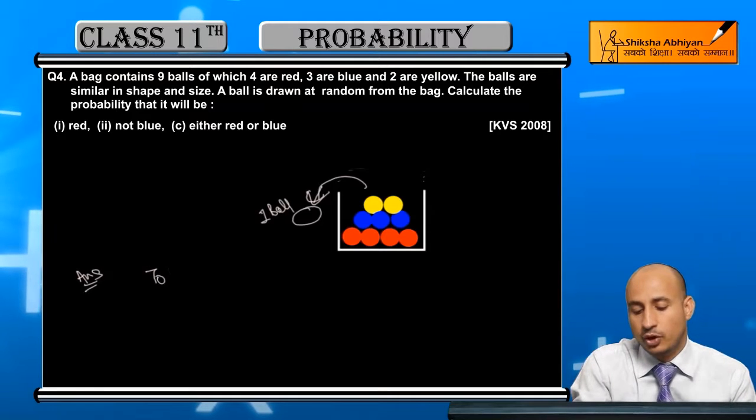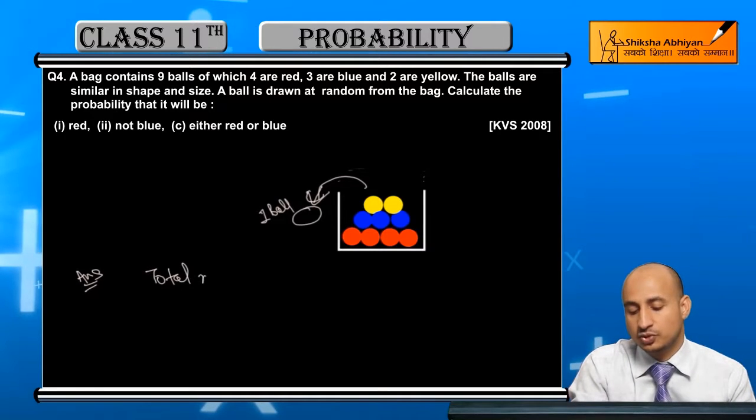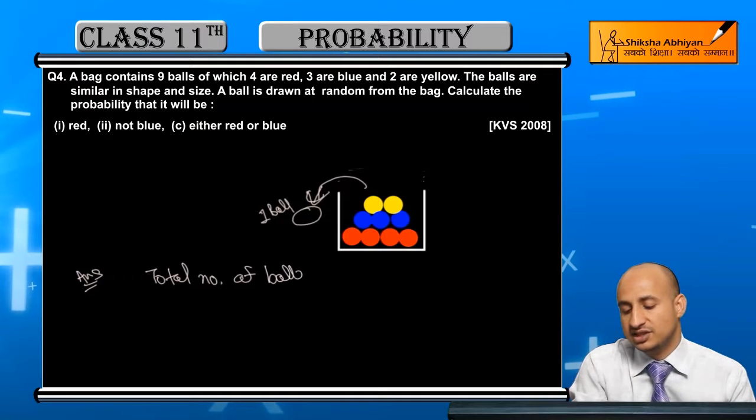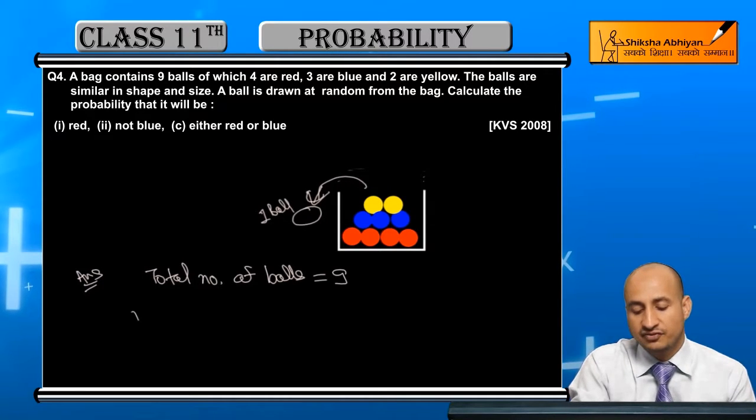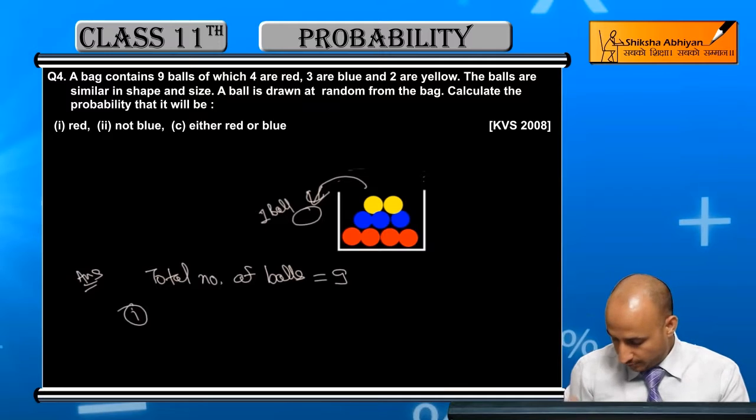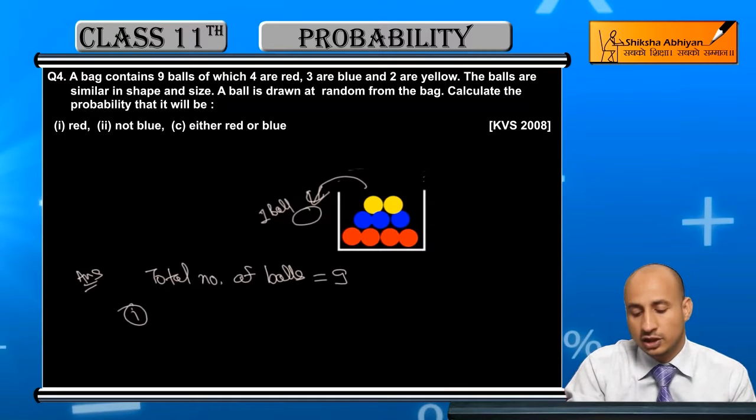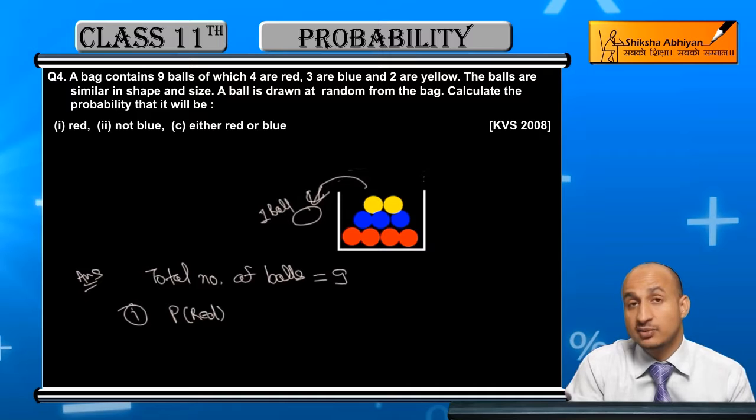Now you can see here, first of all start here. Total number of balls here is equal to 9. And first, what is the probability of red? The probability of red? What is the number of red? 4 upon a total of 9.